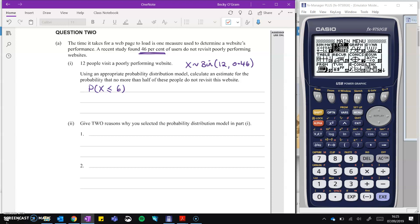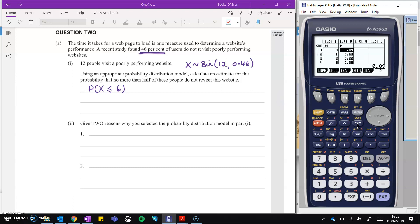So probability that X is less than or equal to 6. Hop on over to the calculator. We're going to go to our stats menu, and we are in distributions and binomial. I'm going to go for a cumulative up to and including. We'll change that to variable where we're just doing it for one thing. So X is 6, our number of trials is 12, and the probability is 0.46. And if we execute, we get our probability is 0.7157.